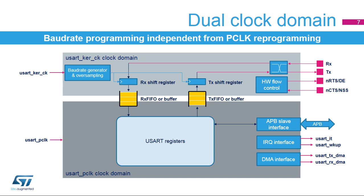The USART block is an APB slave that can rely on DMA requests to transfer data to or from memory buffers. The functions of the TX and RX pins can be swapped, which allows it to work in the case of a cross-wired connection to another UART.